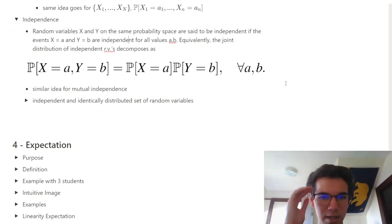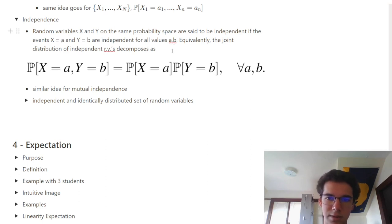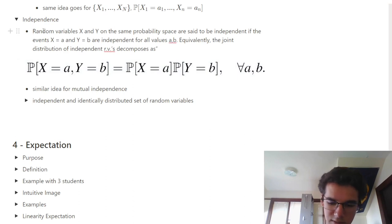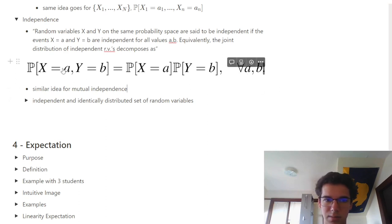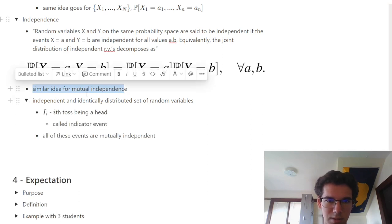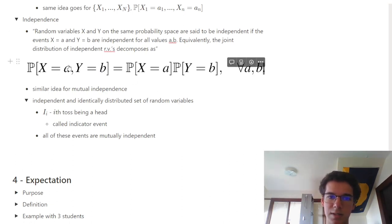Random variables X and Y on the same probability space are independent if the events X=a and Y=b are independent for all values of a and b. Equivalently, the joint distribution of independent random variables decomposes as the product of their individual probabilities. For mutual independence of X1 through Xn, we can simply multiply all probabilities together.